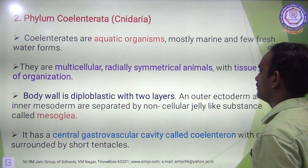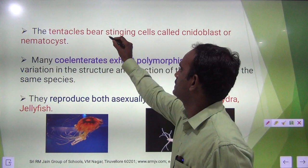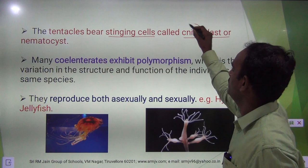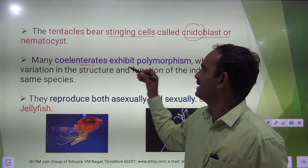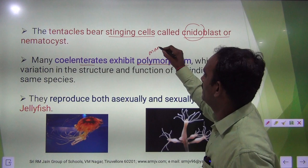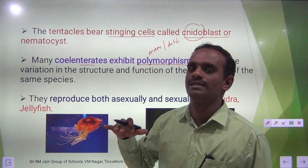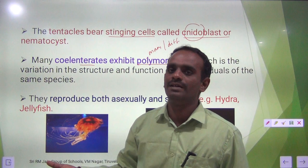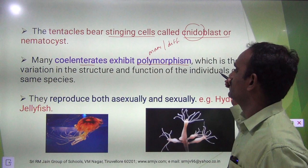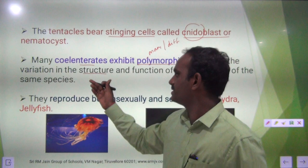The tentacles bear stinging cells called cnidoblasts, which are also called nematocytes. Many coelenterates exhibit polymorphism — poly means many or different, morphism means they have different morphological structures. So organisms under coelenterates exhibit variation in the structure and function of individuals of the same species.